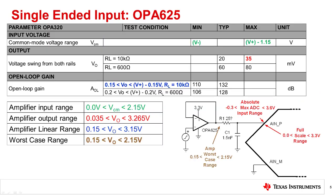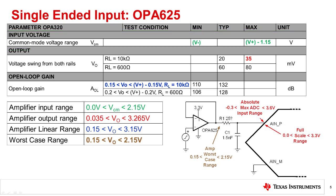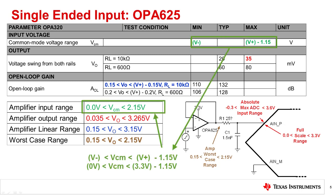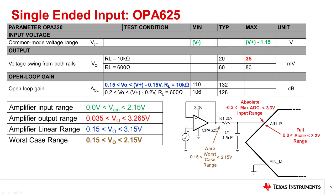Here, we show a different op amp drive example. The previous example used a rail-to-rail amplifier, so the input range did not have a common mode limitation. In this case, however, a rail-to-rail amplifier is not used, and the common mode limitation is significant — we are limited to within 1.15 volts of the positive supply. Working through the math, you can see that the worst case range limitation is limited by common mode for the positive swing and by the linear range for the negative swing. In the next slide, we will see how to avoid common mode limitations.